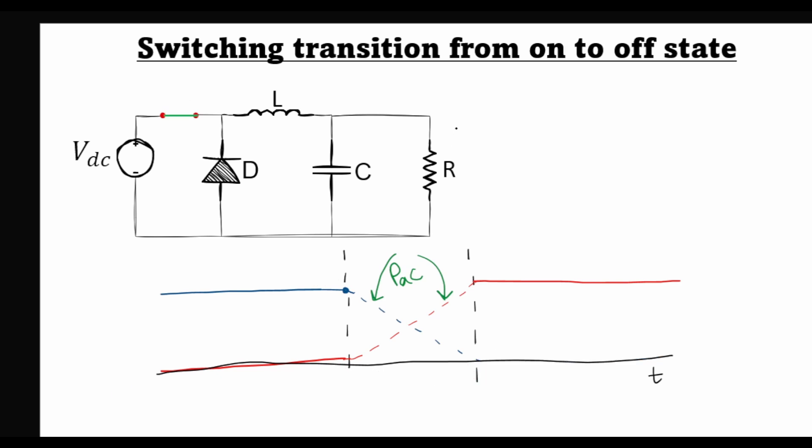There will be a similar transition when the transistor is going from the on state to the off state. In this case, the current will already be equal to I0 and it will transition from I0 to 0 in a time period T switch. And the voltage will go from 0 to V0. If this is taken as an arbitrary starting point of 0, then this time period will be T off.